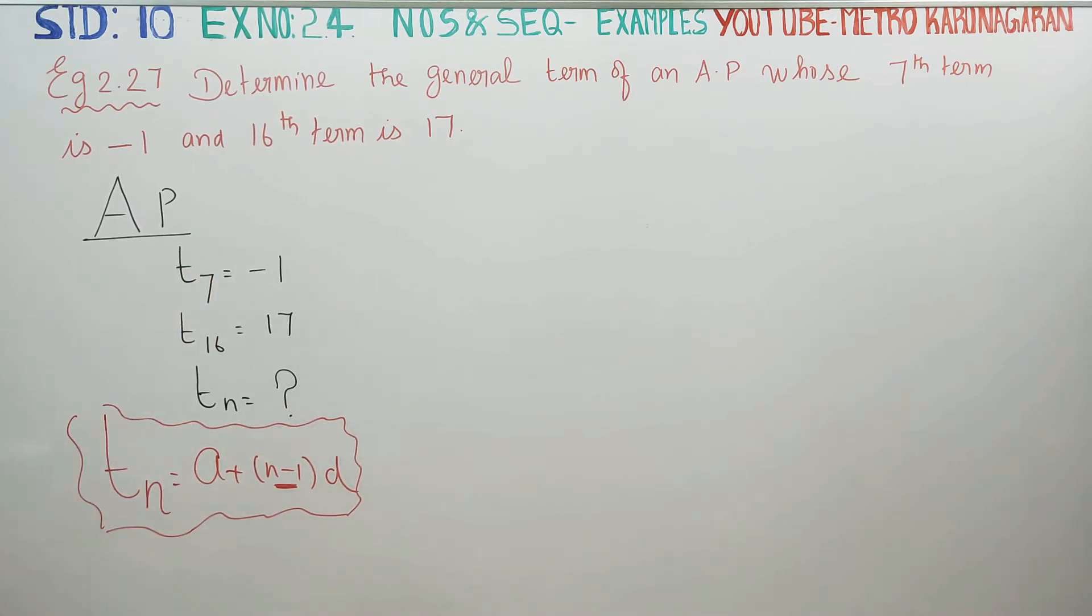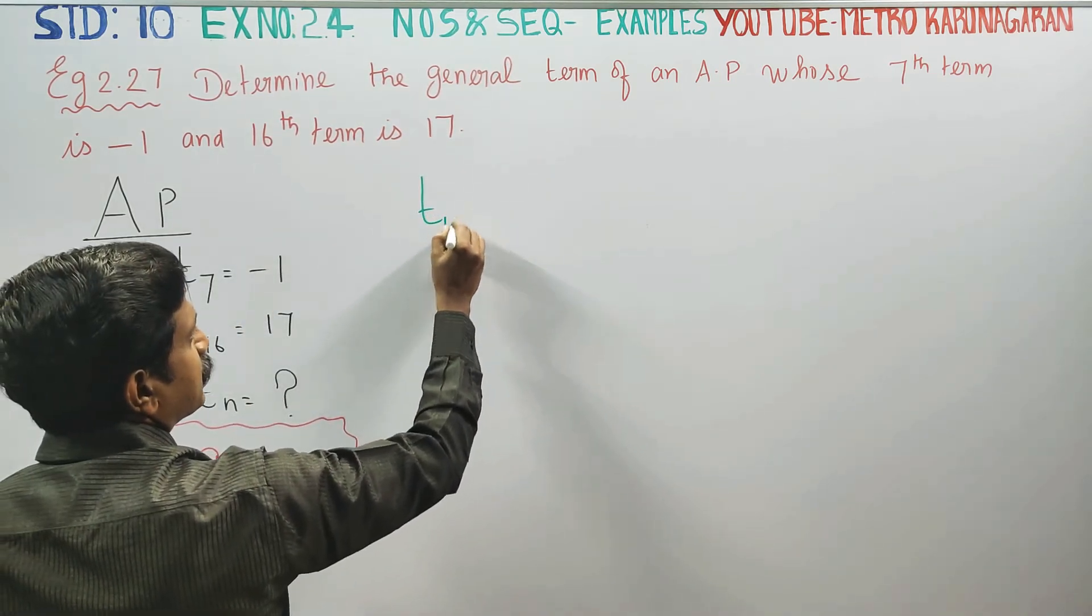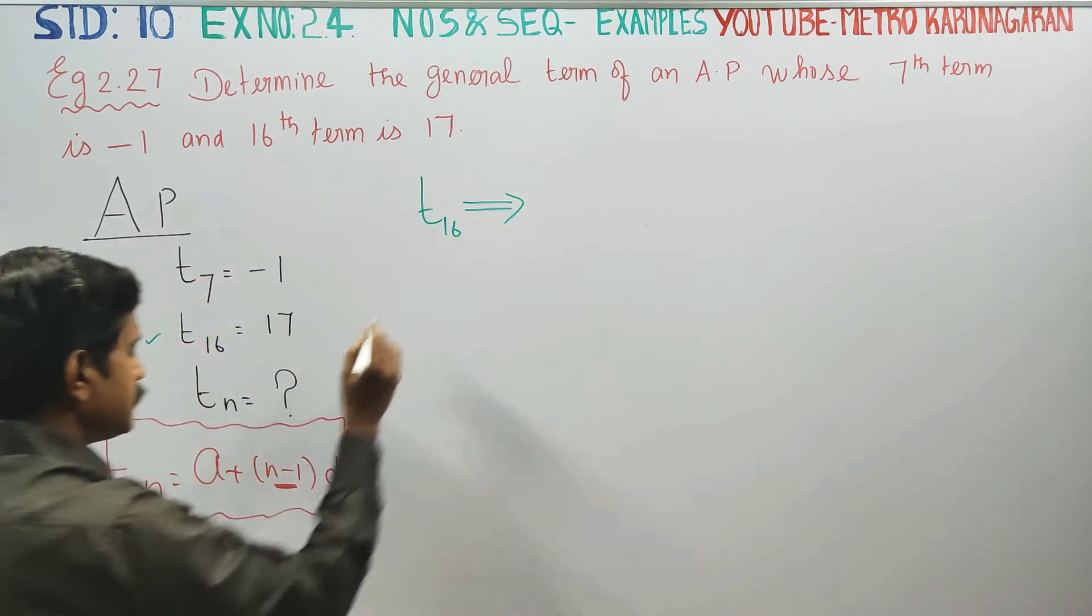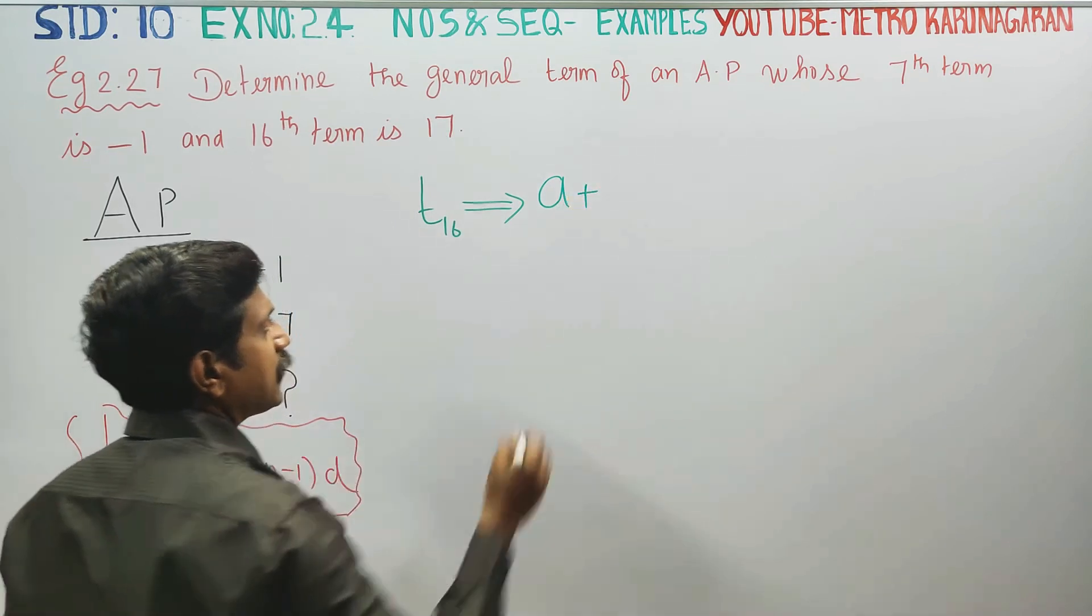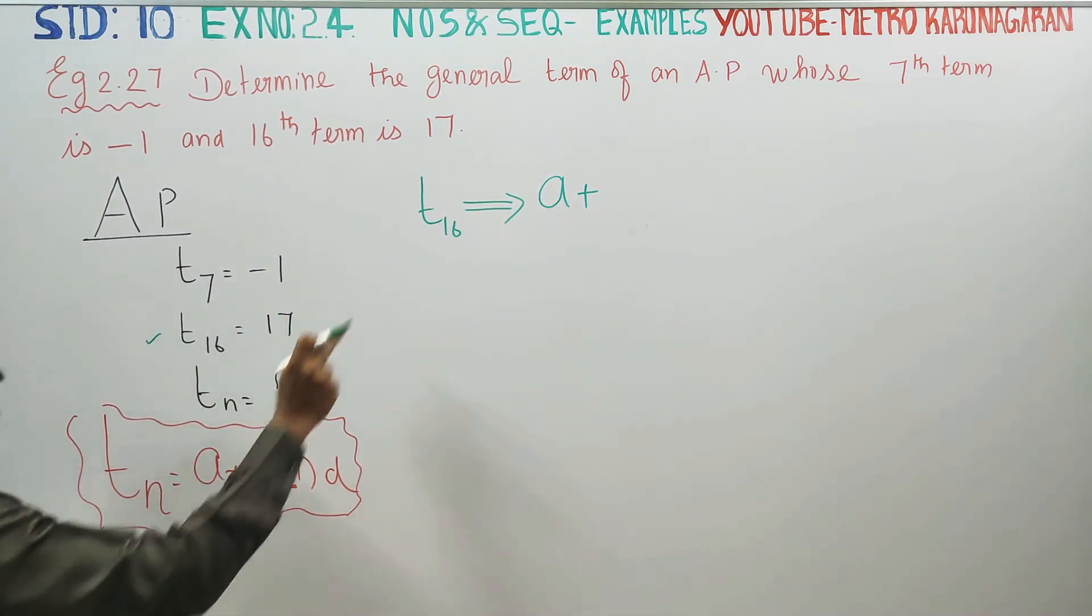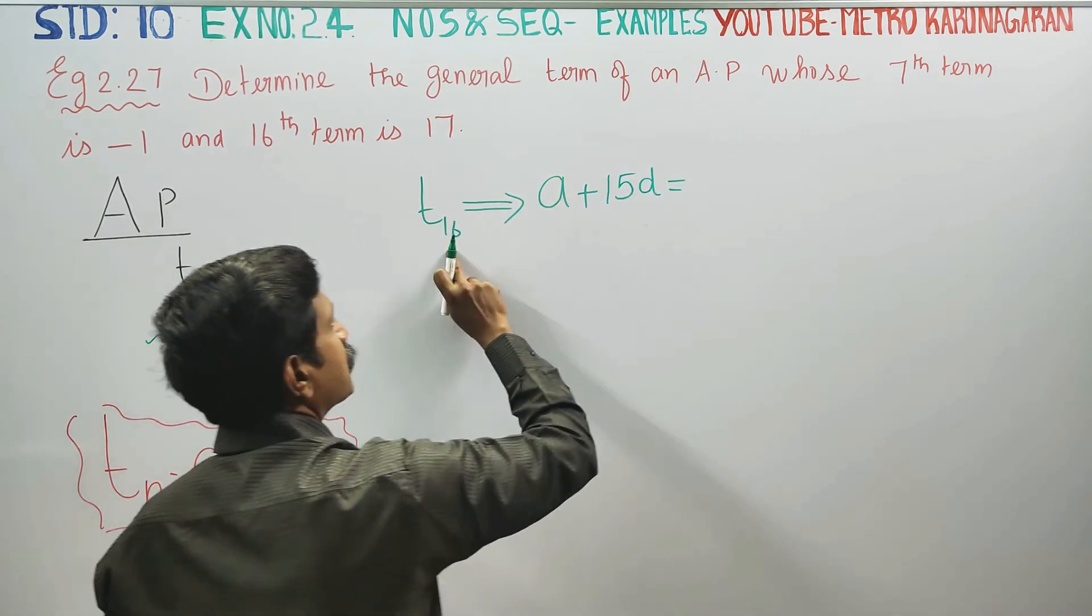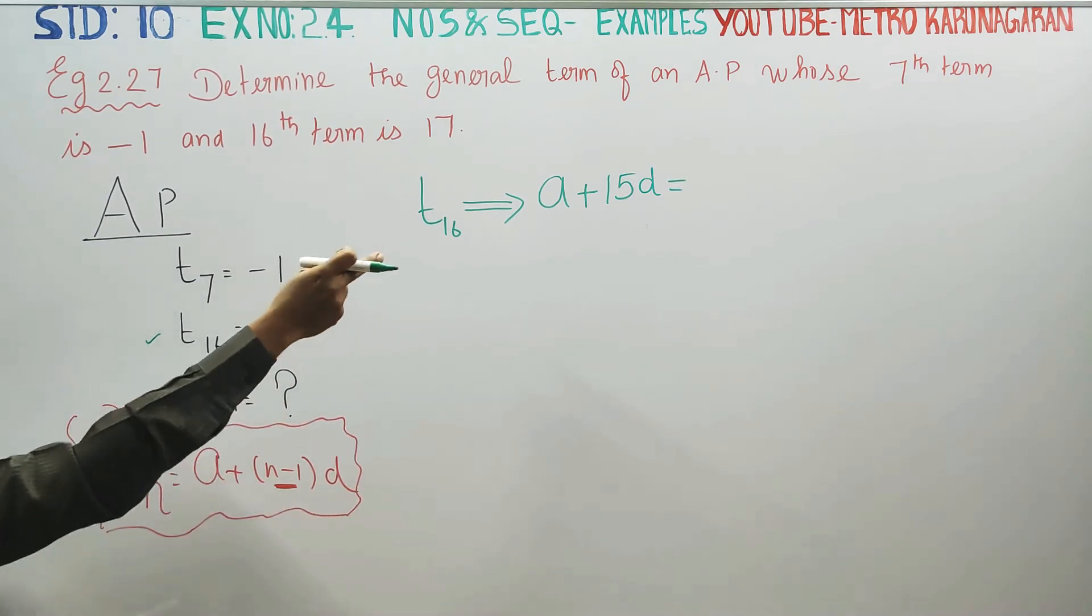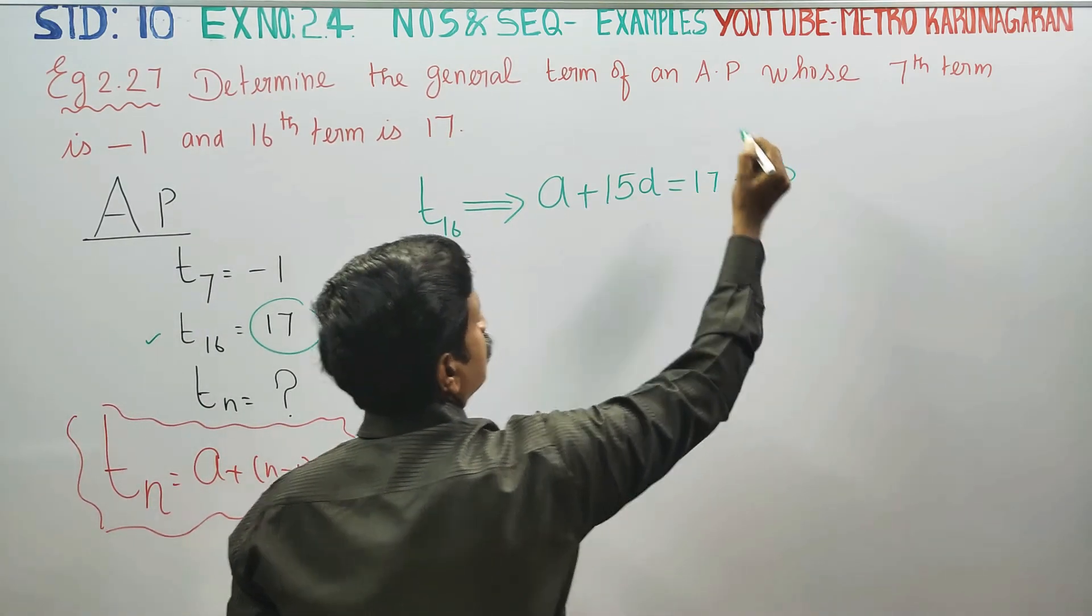T16, here is how you write that. A plus N minus 1, N is 16, so 16 minus 1 is 15D. T16 is equal to A plus 15D equals 17. This is equation number 1.